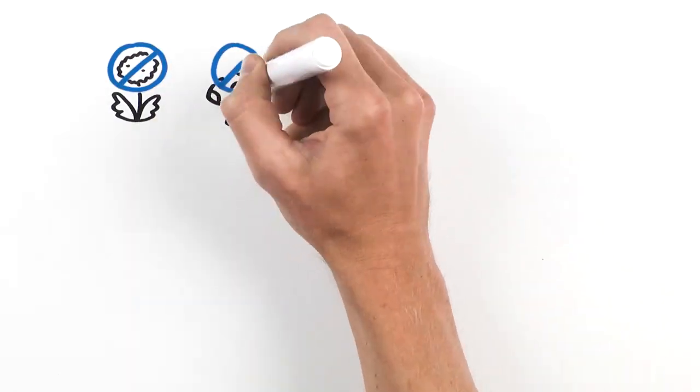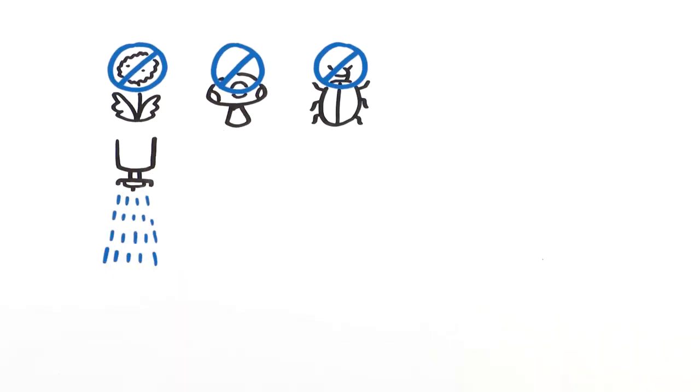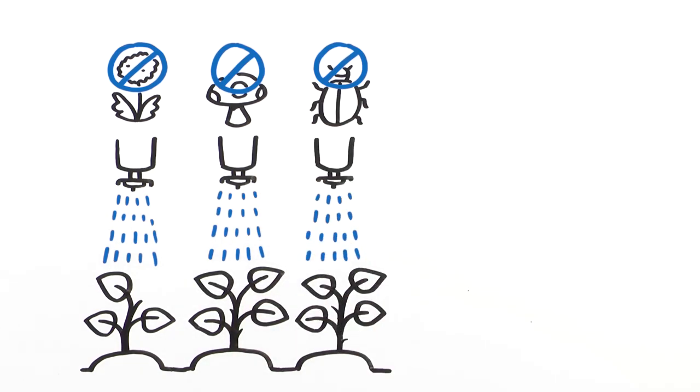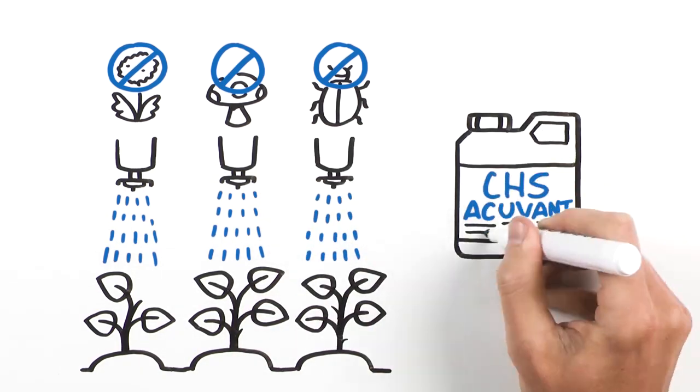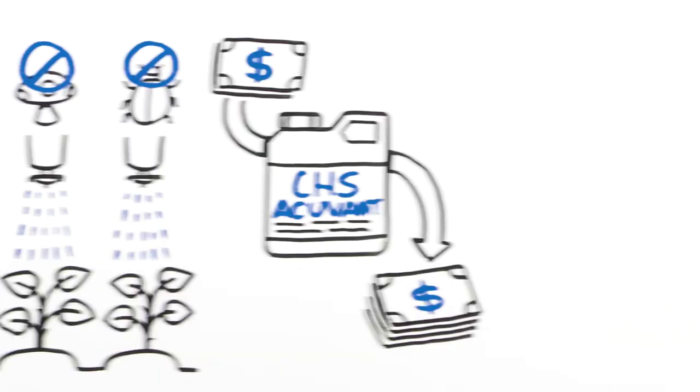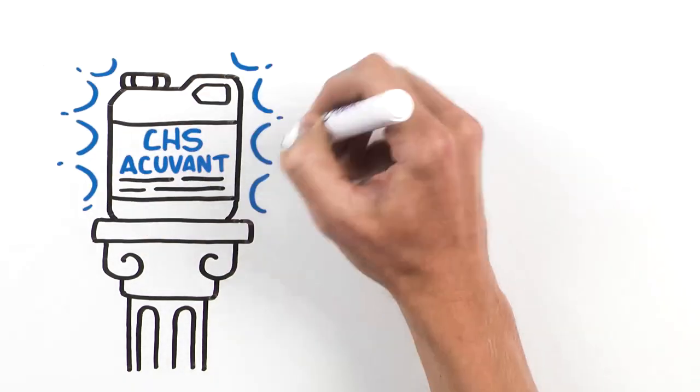When your herbicides, fungicides, and insecticides stay on target, the result is better weed, disease, and insect control. It's how CHS Acuvant maximizes your input investment while protecting your crop. You can count on CHS Acuvant for other advantages too.